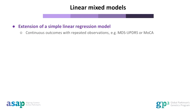I am going to start with linear mixed models, also called linear mixed effects models. This is an extension of a simple linear regression. It is a method used to assess longitudinal continuous outcomes, such as the MDS-UPDRS or MOCA. If we start off with a single measurement of the MDS-UPDRS, this is what we might analyse in a traditional linear regression if you only have one time point. However, in a longitudinal study, you probably repeat this assessment a few times, so you ask your patients to come for several follow-up visits, giving multiple observations of the MDS-UPDRS at different time points.